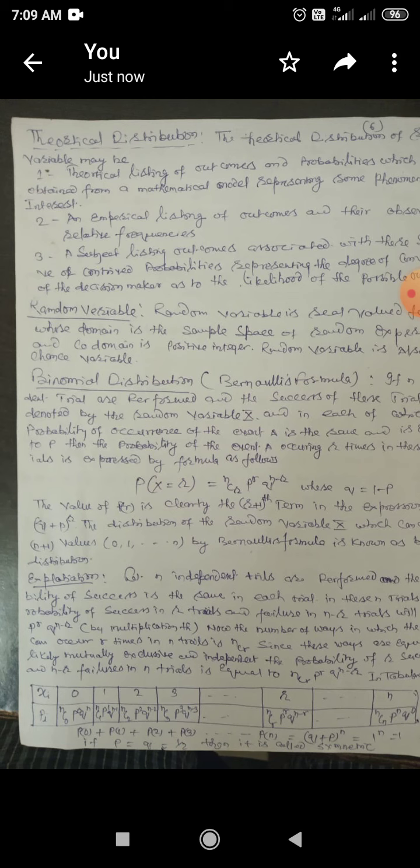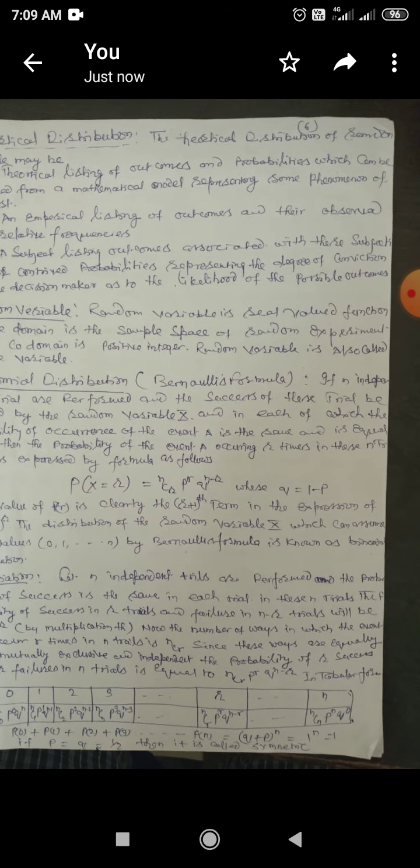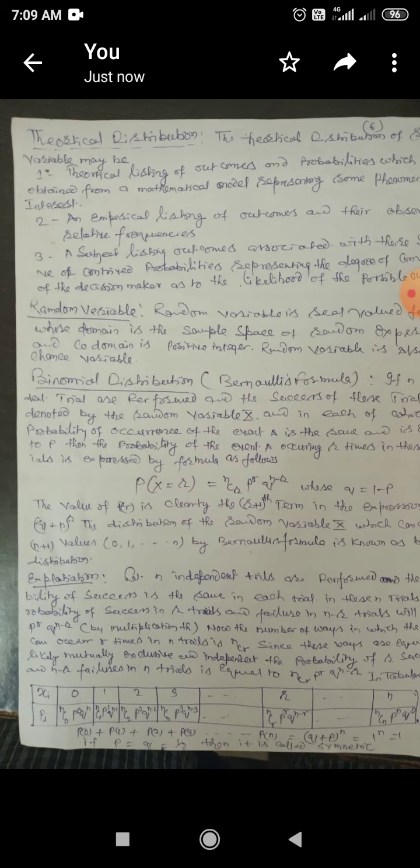Binomial Distribution, also called the Bernoulli formula. If N independent trials are performed for any event, and the number of successes of these trials be denoted by the random variable X, and in each of which the probability of occurrence of event A is the same and equal to P, then the probability of event A occurring R times in N trials is expressed by the formula as follows. This is the formula of binomial distribution.